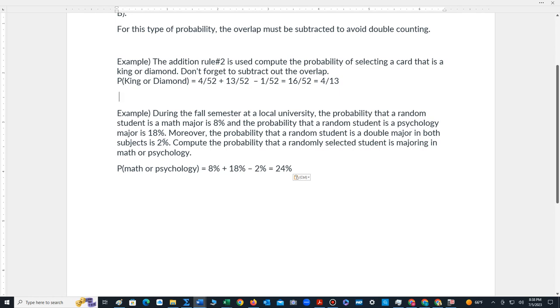So once again, we want to avoid double counting those people who are majoring in both subjects. So first we write down the probability that a student is a math major, 8%, plus the probability that a student is a psychology major, 18%, minus the 2% because we're counting the 2% in both of these first probabilities. We only want to count it once. So subtract out 2% to get the answer of 24%.